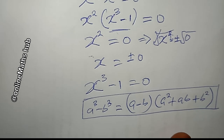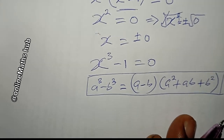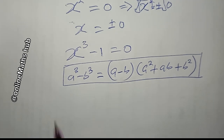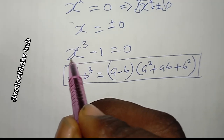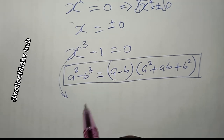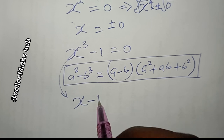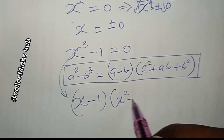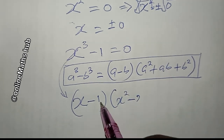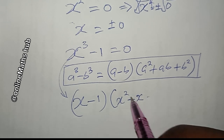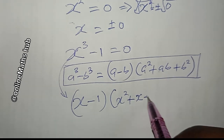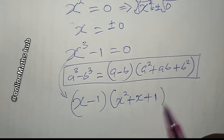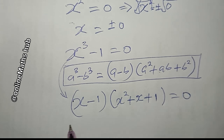I'm going to use this expansion here. In this case, my a is x and my b is 1. So this changes to (x minus 1) times (x squared plus x times 1 plus 1 squared), which gives (x minus 1)(x squared plus x plus 1) equals zero.